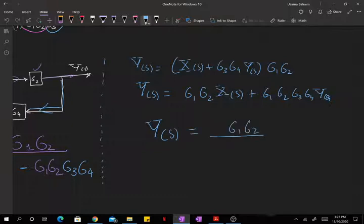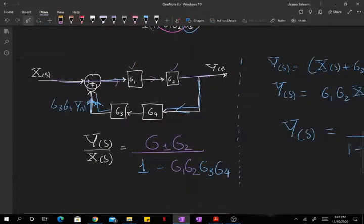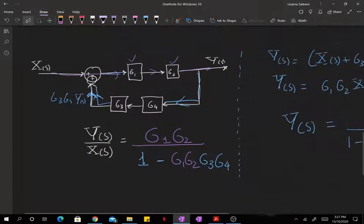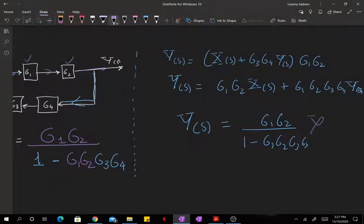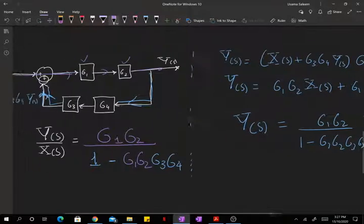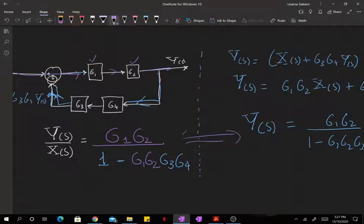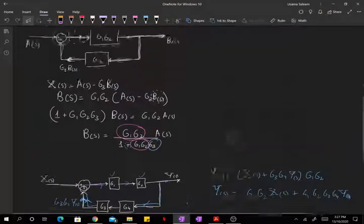G1, G2 over 1 minus G1, G2, G3, G4. So every time you have a feedback loop, you can skip some hassle and just follow the shortcut method that I showed you here. And as you can see, you're getting the exact same result. Hope this was helpful and good luck.